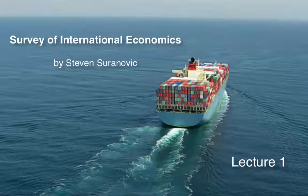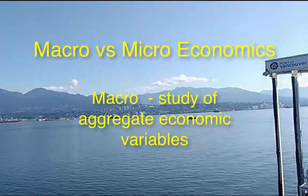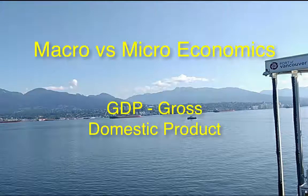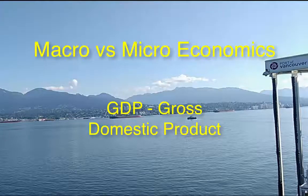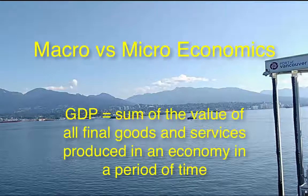We'll start by working through the international macro or international finance section. The quick distinction: macro looks at economic aggregate variables—things summed up across the entire economy—like gross domestic product, which is a measure of output summed across all firms producing all sorts of goods and services across an entire year. It's aggregated, macro, big picture.